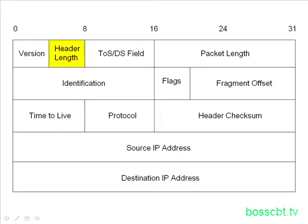The header length field defines the length of the IP header, including any optional fields that may be added. This tells you how big the header actually is.